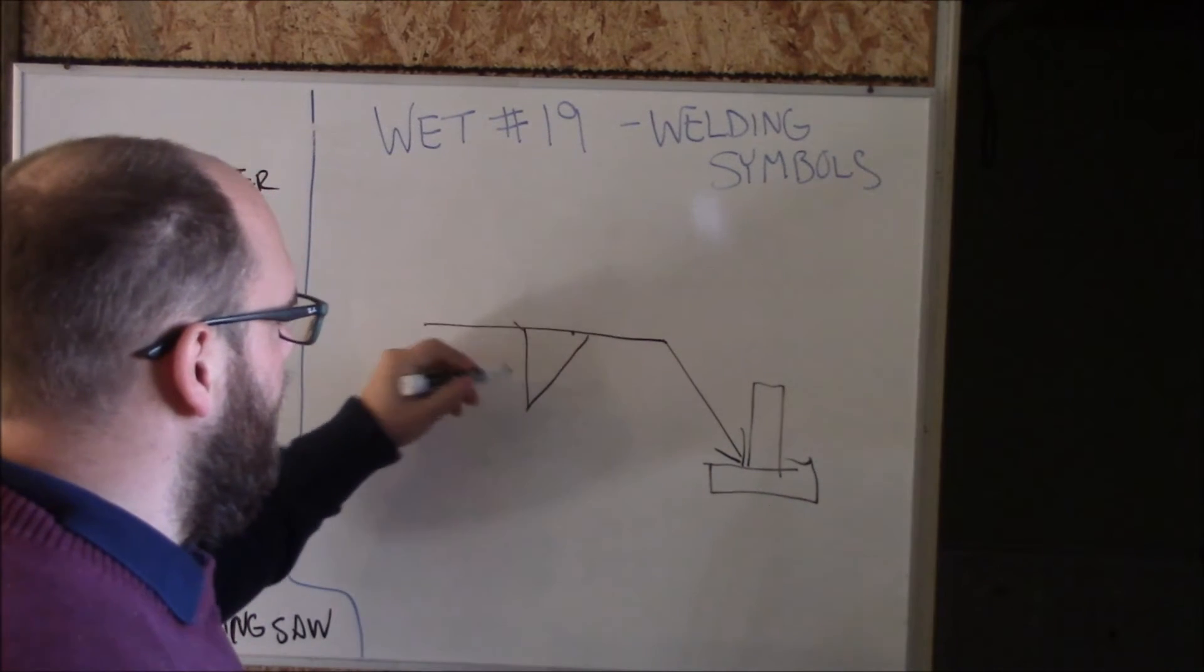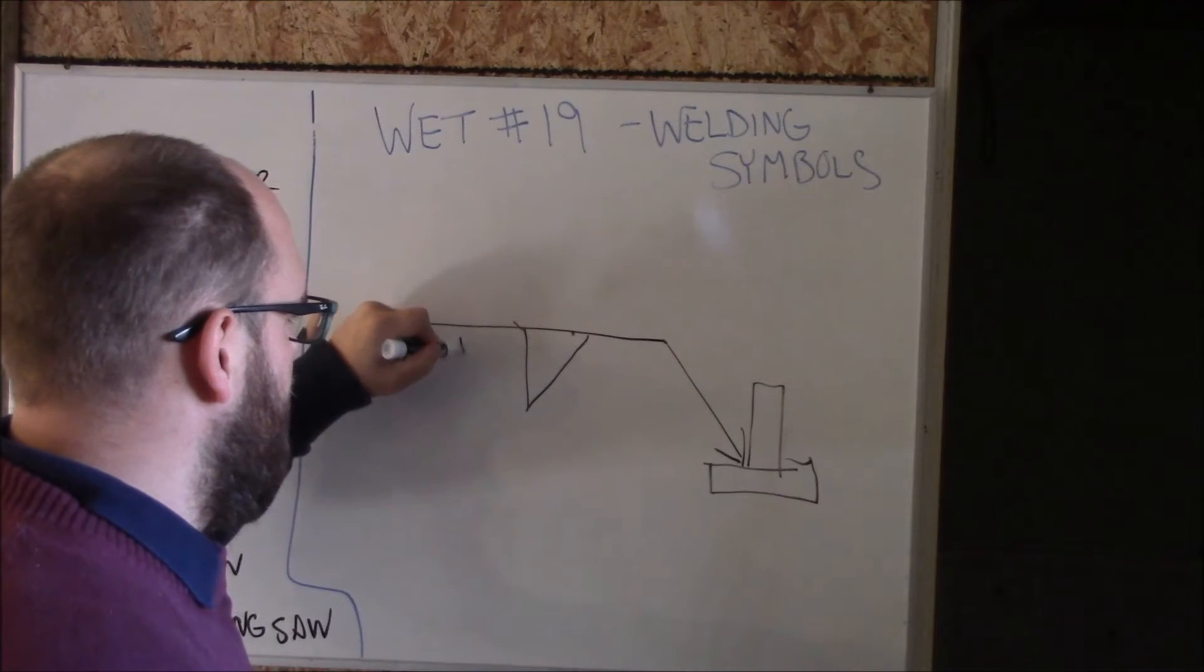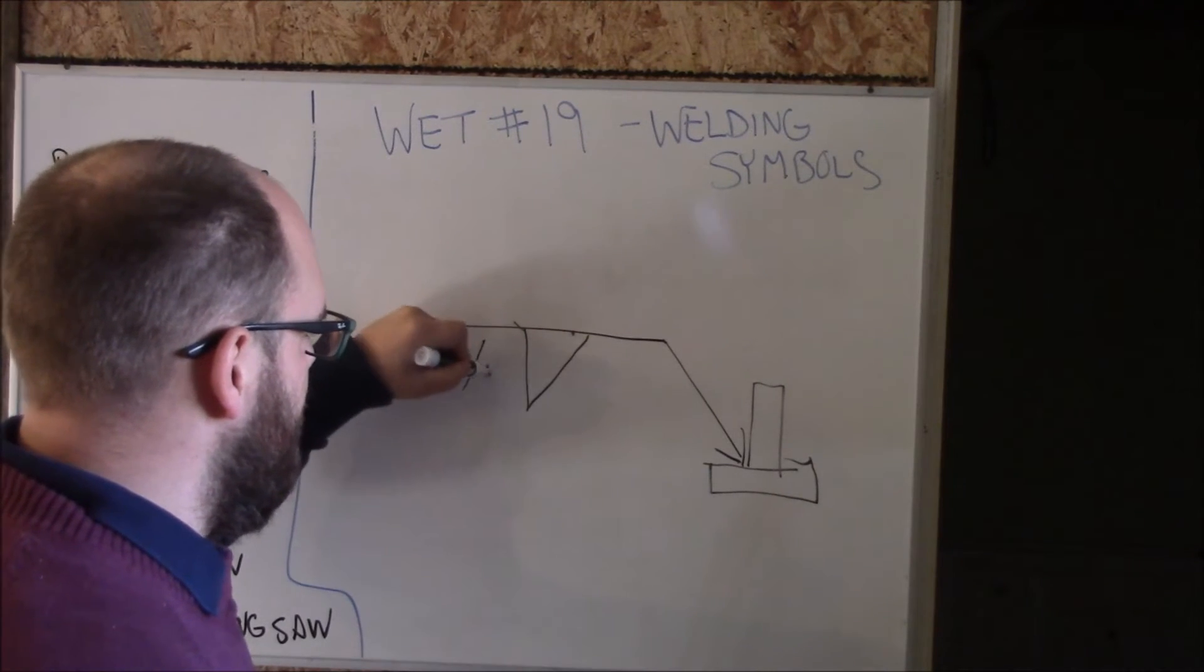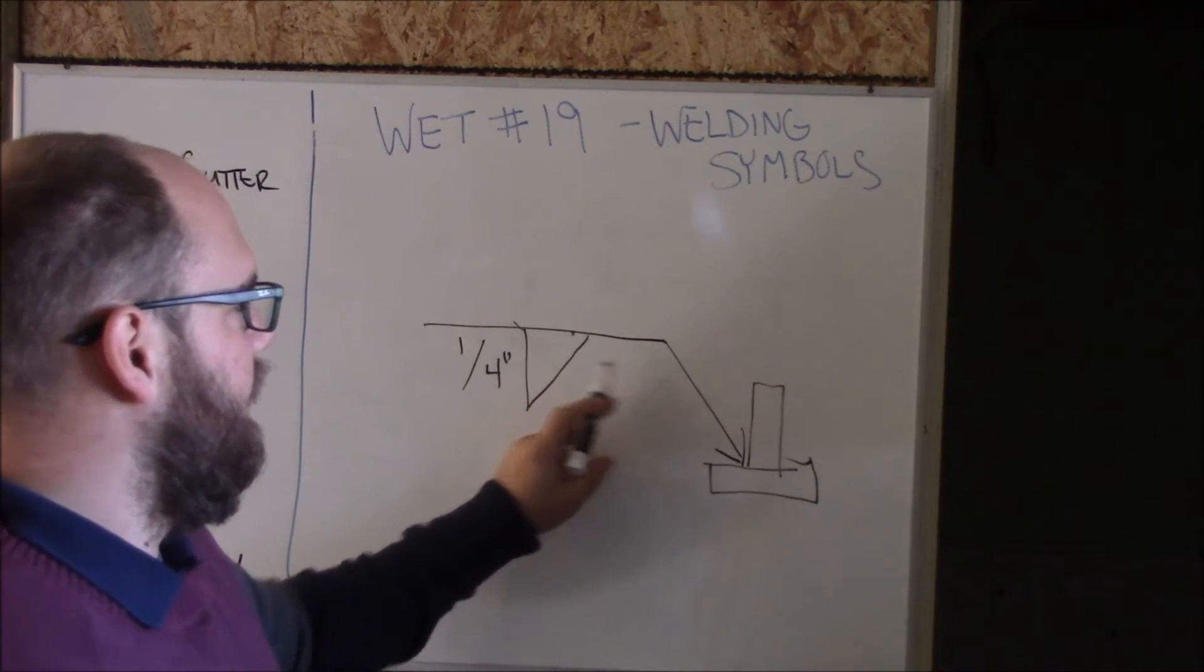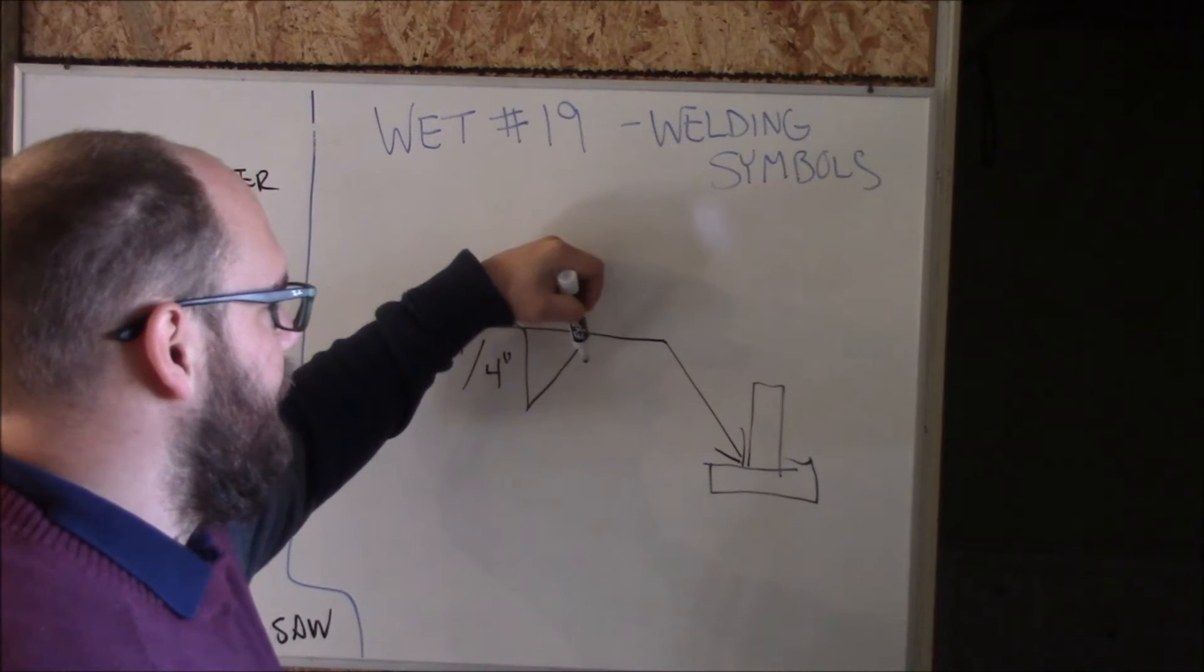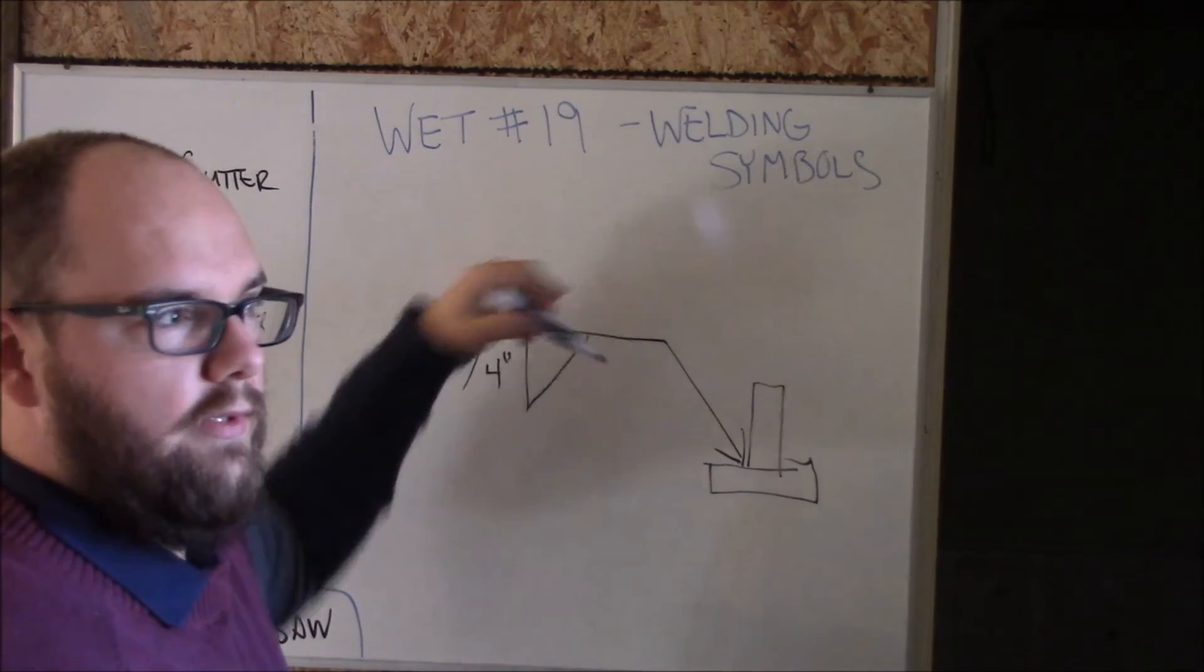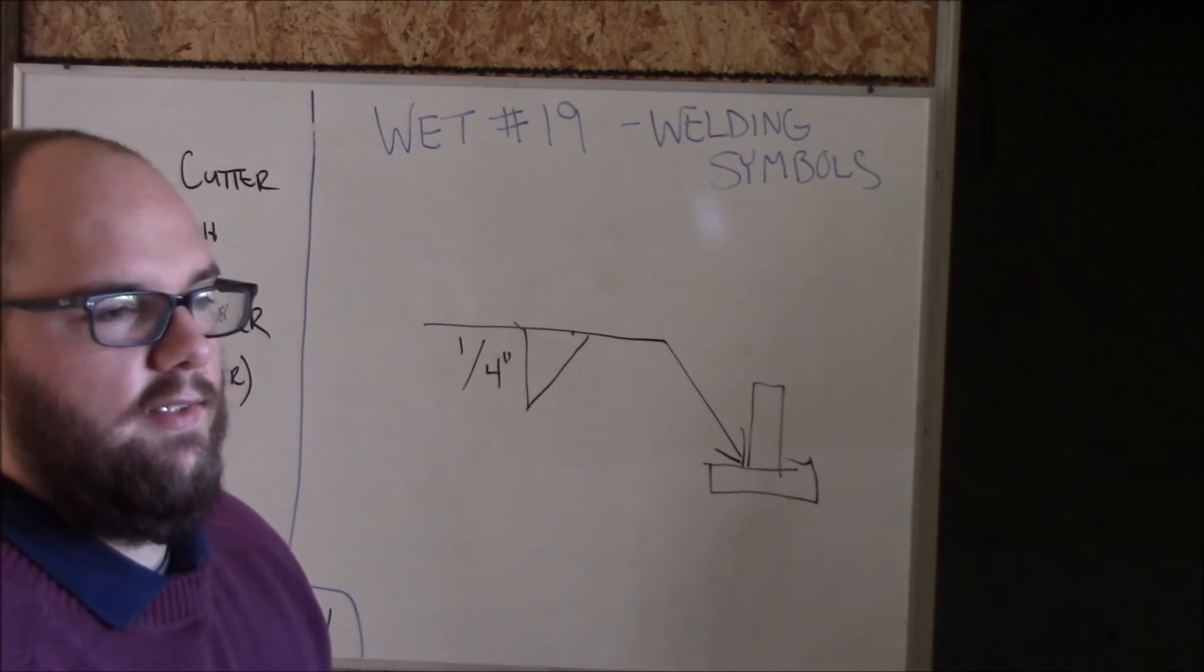And other instances where you might come into some confusion is that you've got on your left side, you're going to have your weld leg size, depending on, let's just say, a quarter inch. What you can have over here on the right side of your symbol is, if it's just one number, that's the length of the weld.